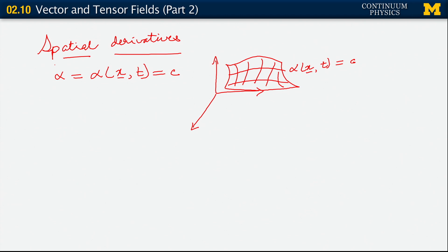So when we restrict those values to c, we get that surface. The reason for doing that is now, if I talk in terms of spatial derivatives, it gives us a nice interpretation for certain spatial derivatives. Specifically, what one can talk about is the following idea.